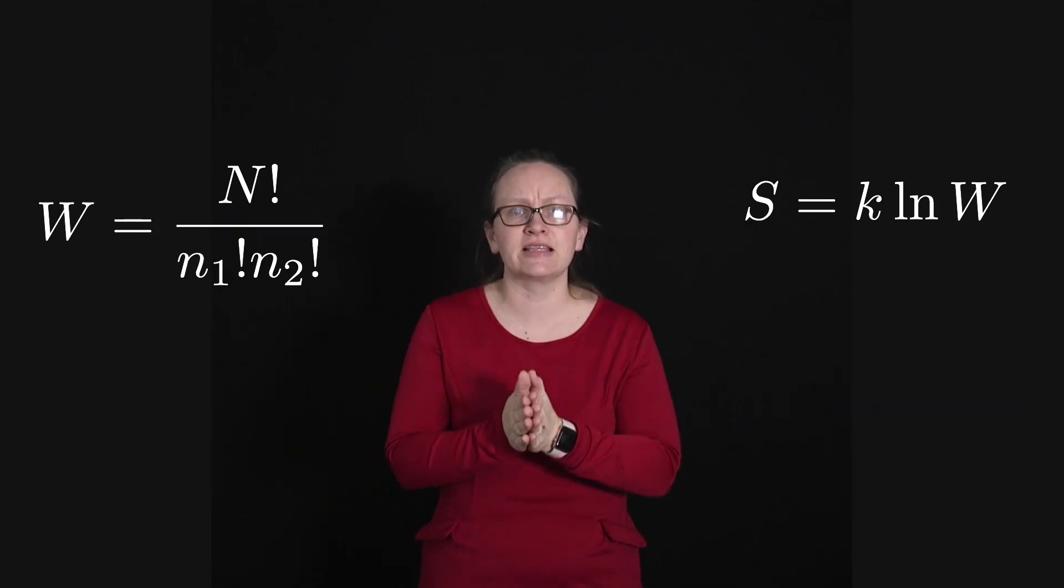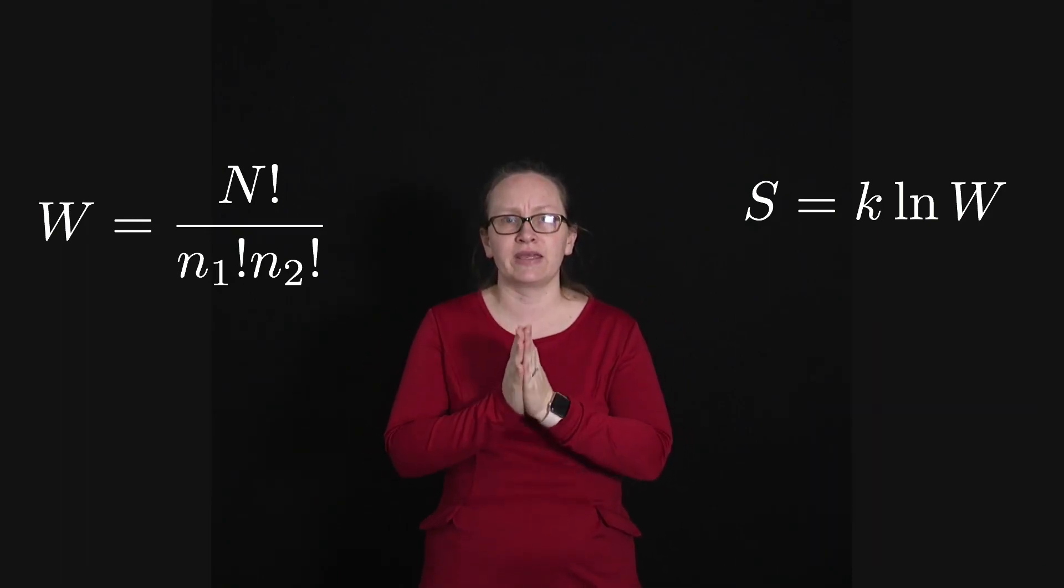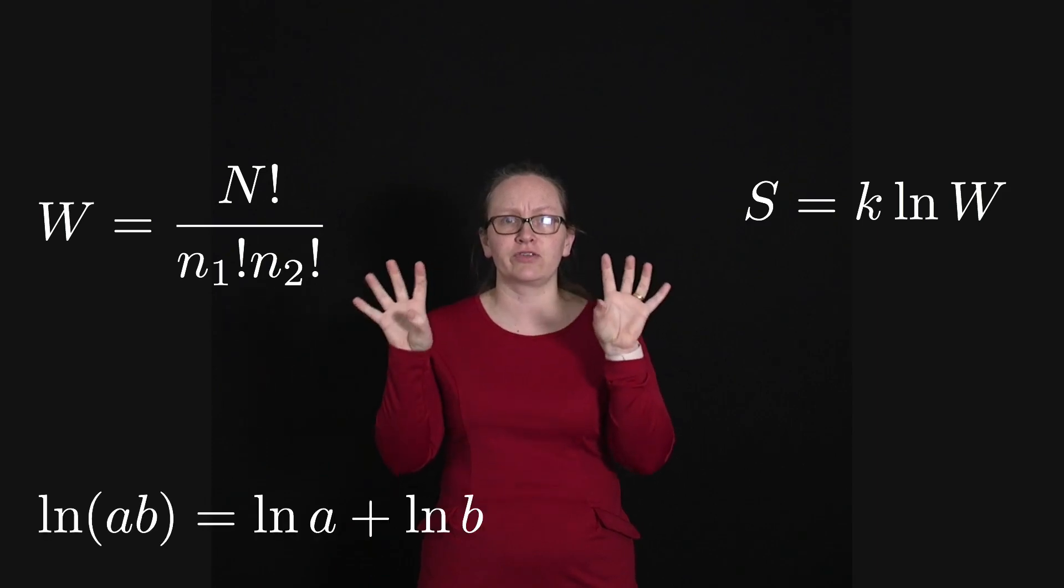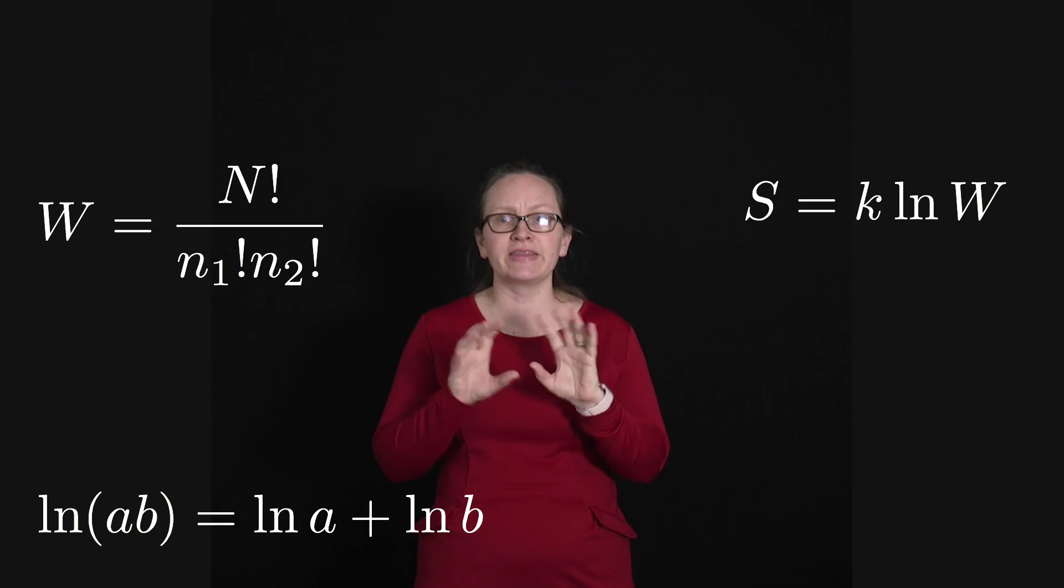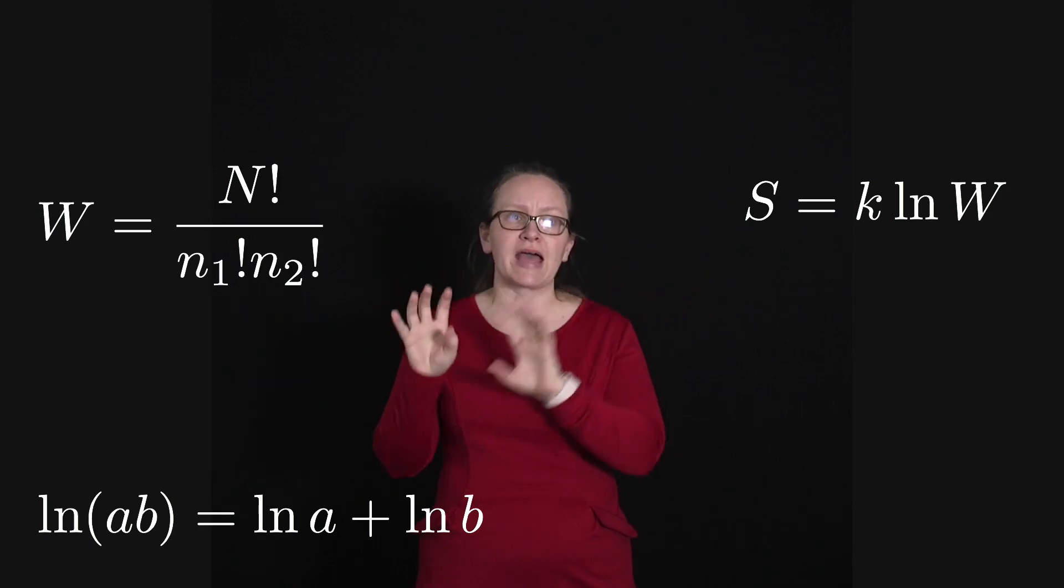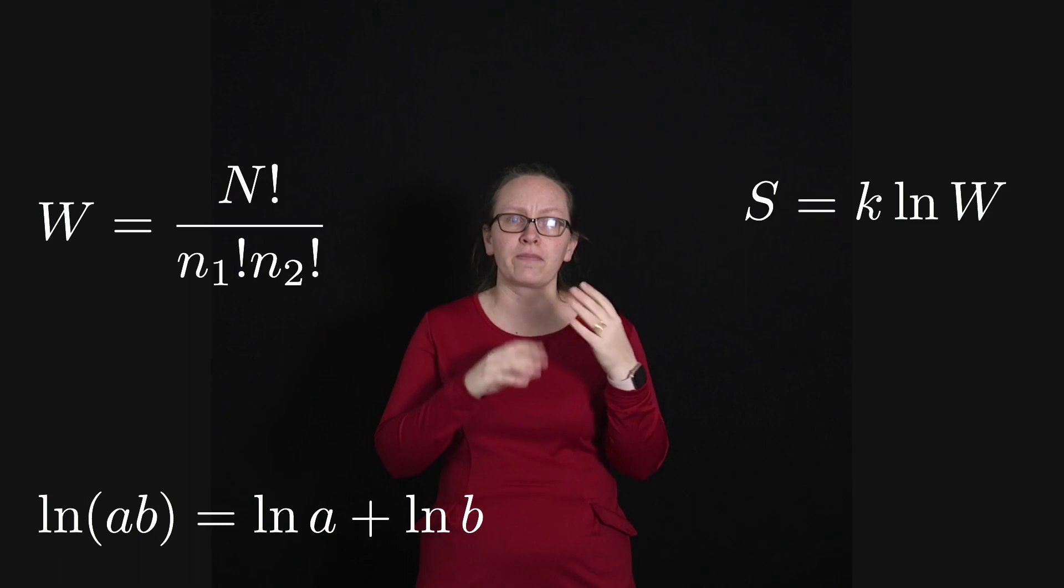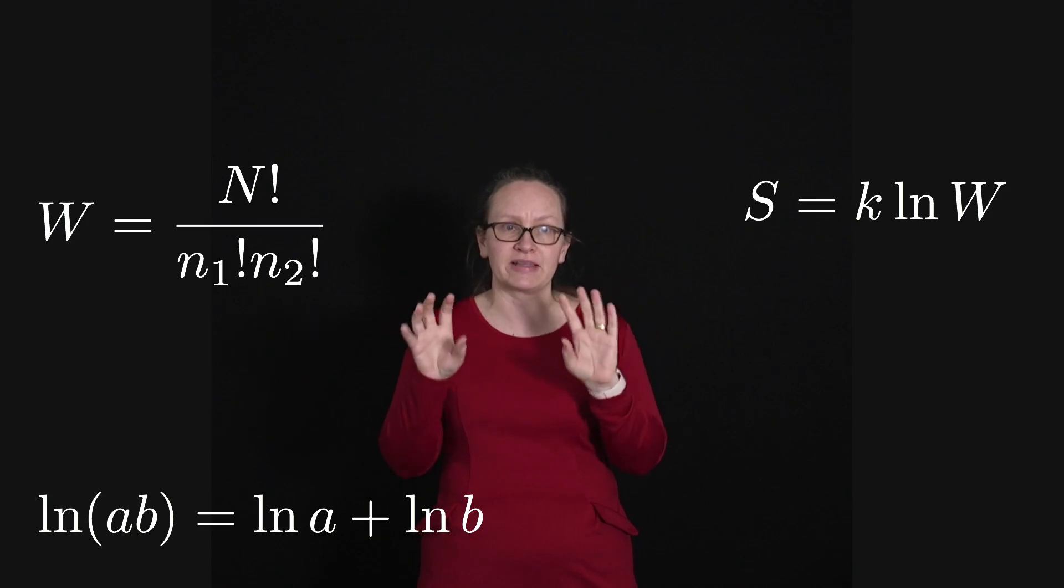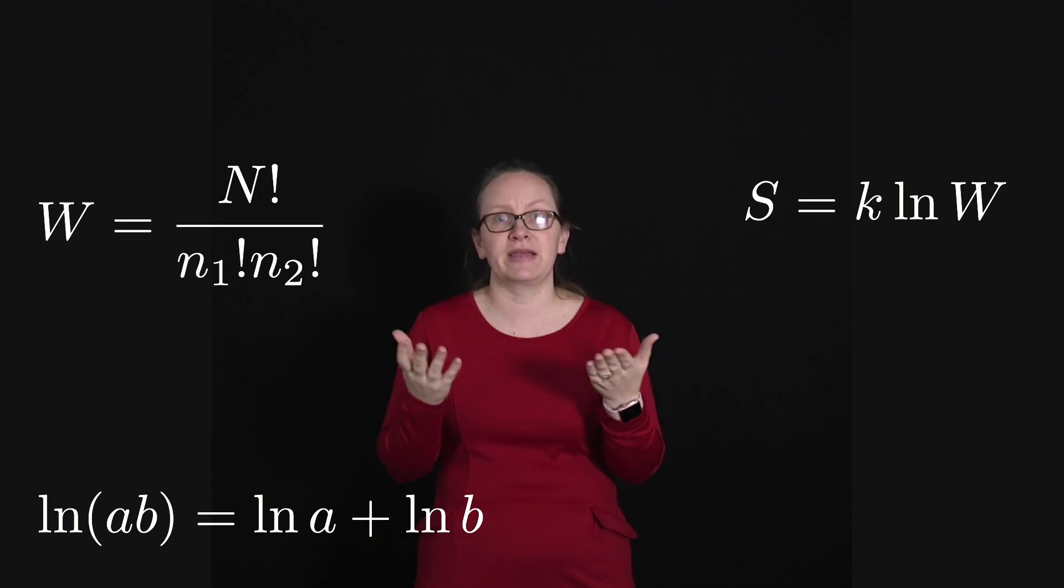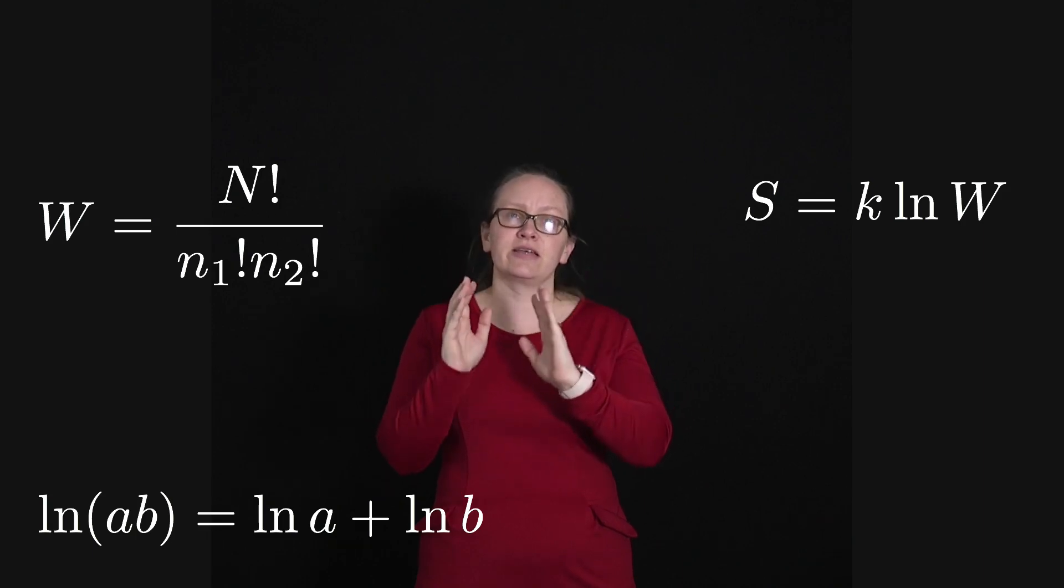It does make sense that we've got a logarithm in there, because if you think of two individual systems and combining them, the entropies of those two systems add together, while the probability of specific states is calculated by multiplying the individual probabilities together. And logarithmic functions have this property. We know that log of a times b equals log of a plus log of b.